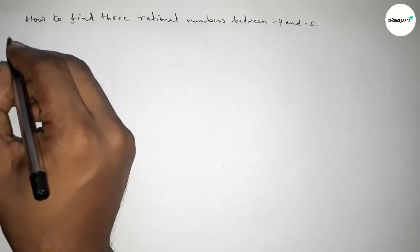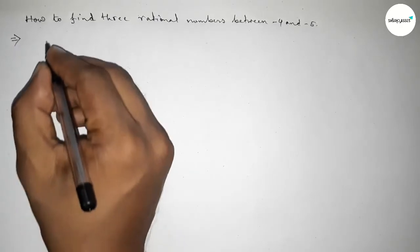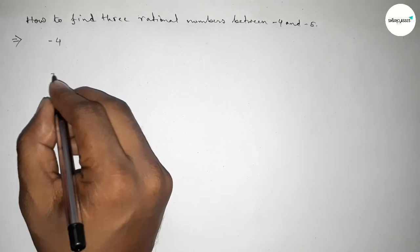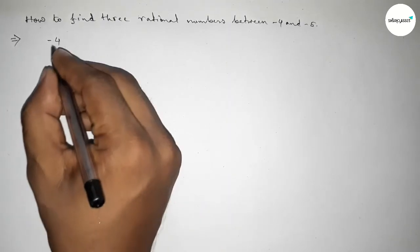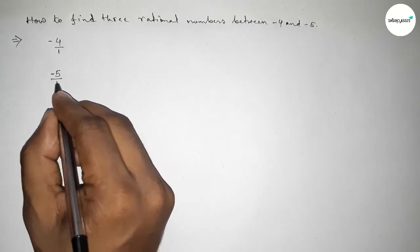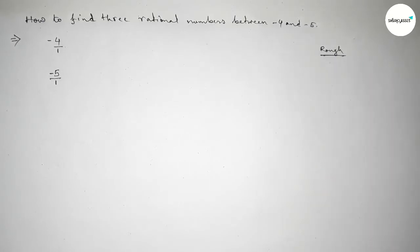First of all, let us solve this problem. So here given two numbers: -4 and -5. Next, we can write -4 as -4/1 and -5 as -5/1. Now let's discuss an important method.